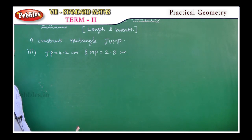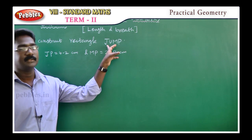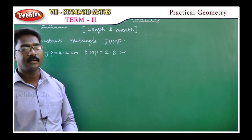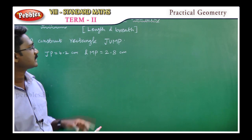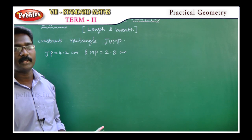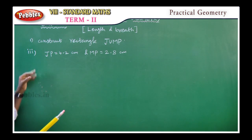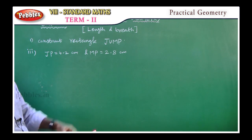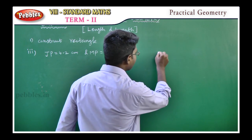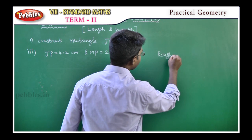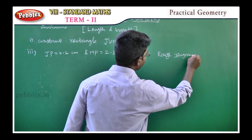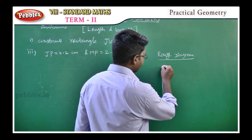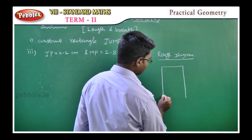Second exercise, first problem: construct rectangle JUMP. Find also its area. This is the first type — length and breadth given. The measurements are JP equal to 4.2 centimeters and MP equal to 2.8 centimeters. First, we draw a rough diagram of the rectangle shape.